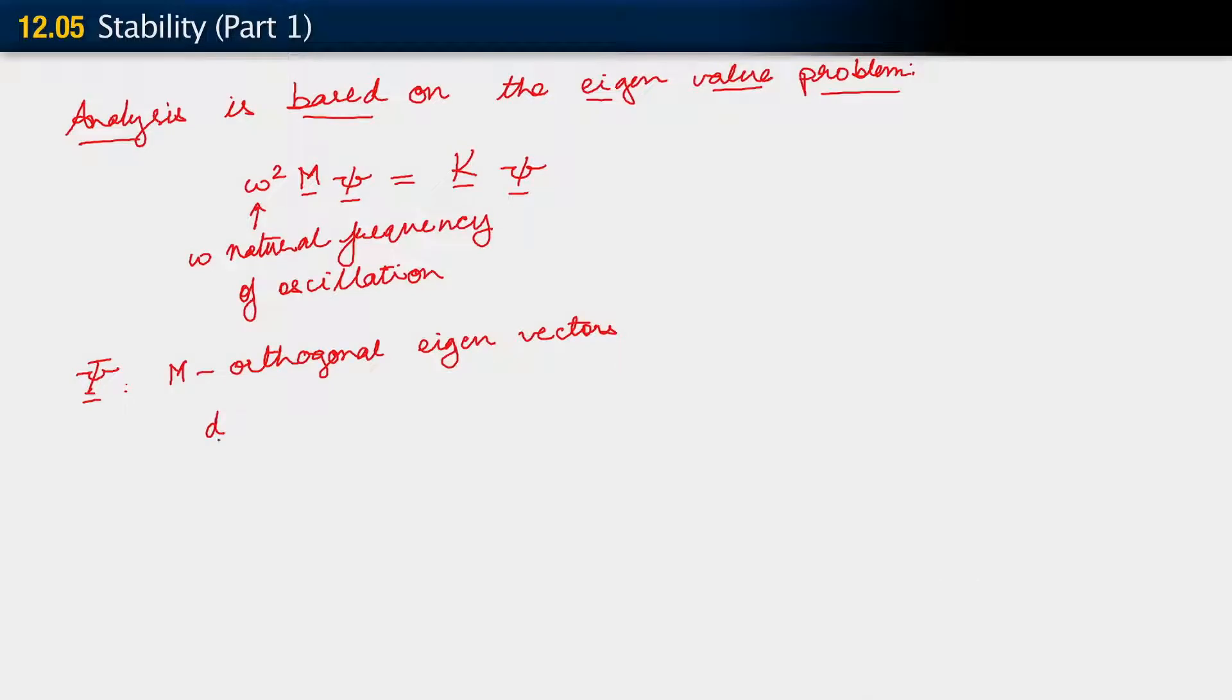When we do this, we proceed just as we did for the parabolic problem. By doing this, we can now do things like saying that any vector, like the D vector, can be constructed through a sum over L, D sup L psi L, where each psi L is an eigenvector. These vectors are M orthogonal, and L equals one to total number of degrees of freedom in the problem. We can do this for every other vector that shows up in the problem—V, A, and so on.